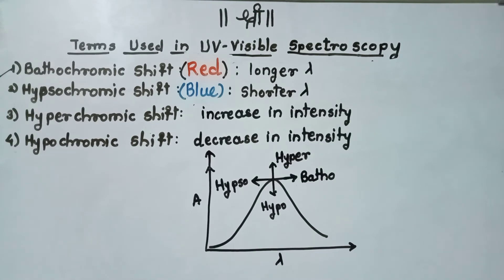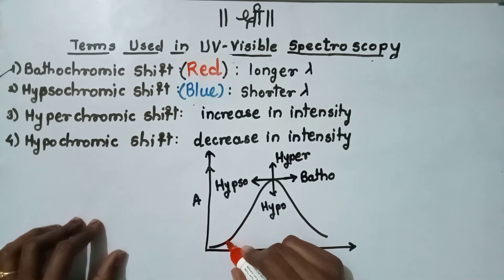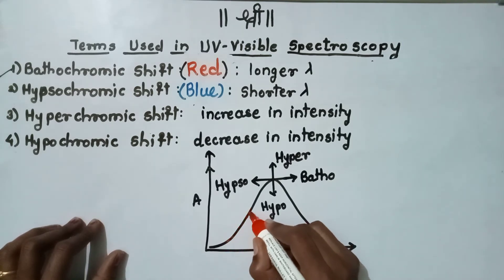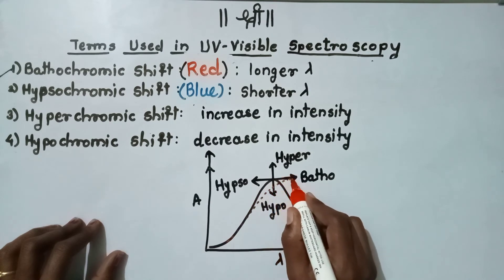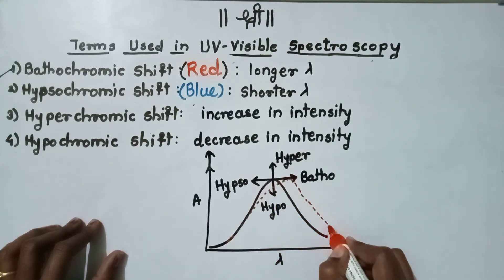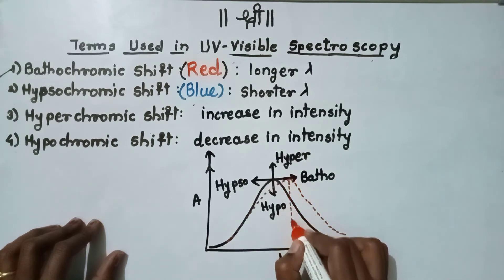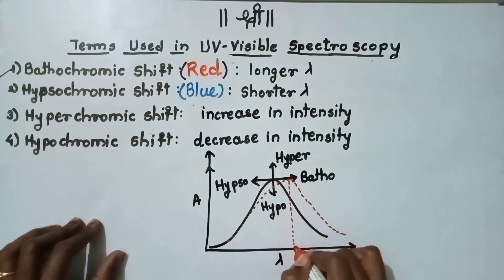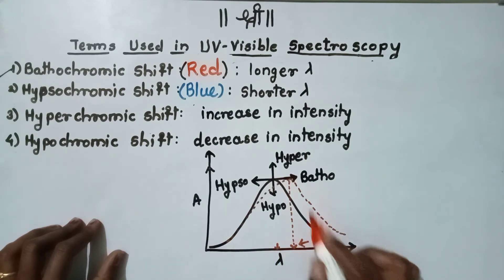The shift means what happens actually when we add an auxochrome to the compound, or when the auxochrome is coupled to the chromophore — the shift in spectra towards the longer wavelength than the previous — and hence bathochromic shift is observed.